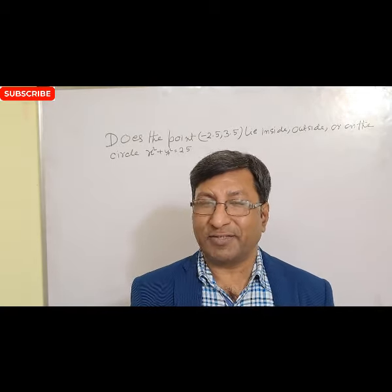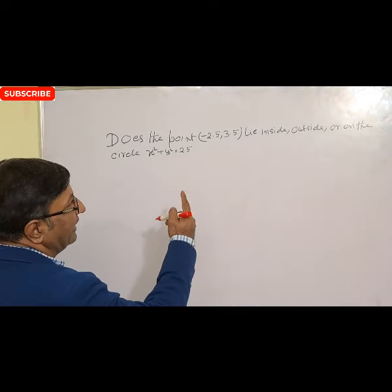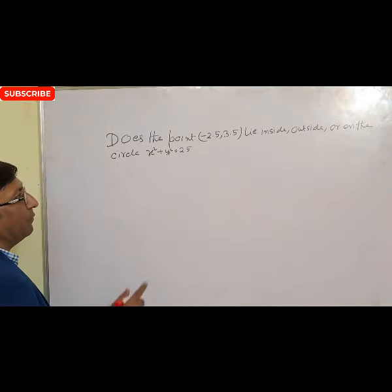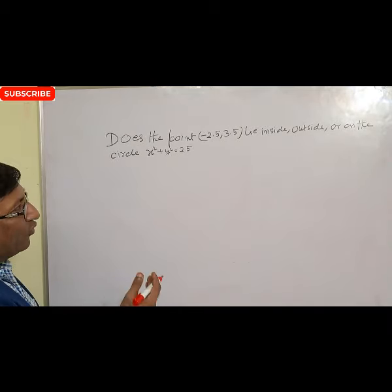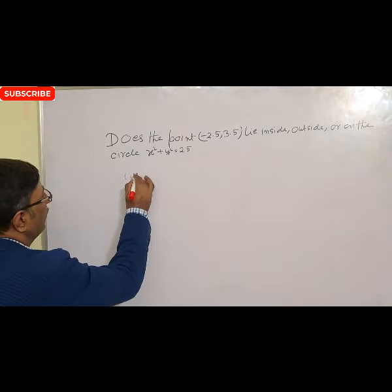Important question of circle. Let us see the question. Question is: Does the point (-2.25, 3.5) lie inside, outside, or on the circle x² + y² = 25? For this type of question, put the value of point x and y in the given equation. If your LHS is equal to RHS, then this is on. If less than, inside. If greater than, outside.